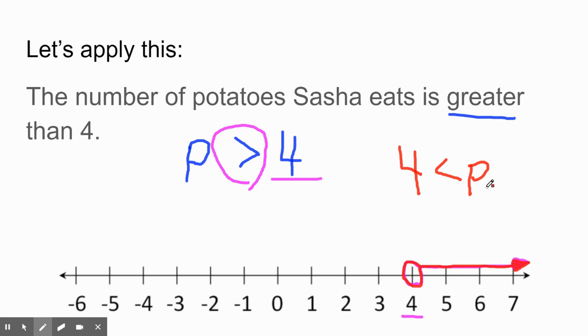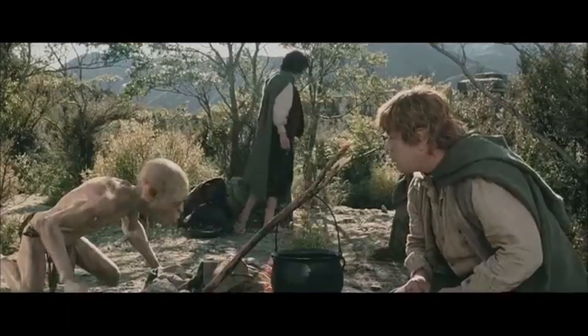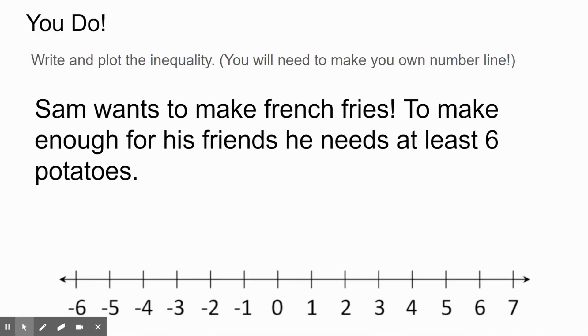It's not that bad, so let's move on to a You Do. You are going to write and plot an inequality for this word problem. You're obviously going to have to make your own number line on your paper. It could look like that if you want to. You could make it bigger—I wouldn't make it smaller—but see what you need. So the problem that we're working on is: Sam wants to make french fries. To make enough for his friends, he needs at least six potatoes. Potatoes—boil them, mash them, stick them in a stew. Pause the video, make your inequality, plot your inequality, and then we'll move on to the next problem. Ready, go.